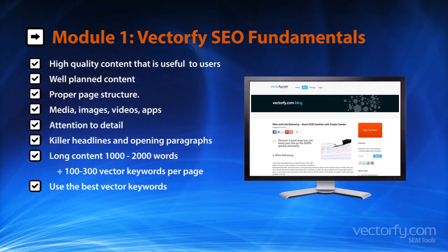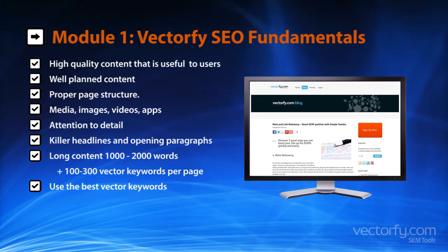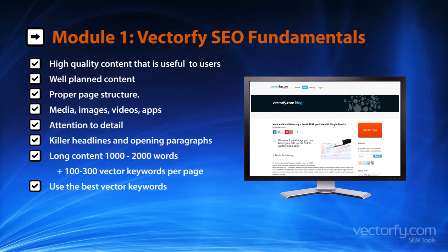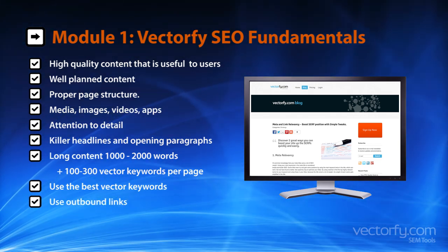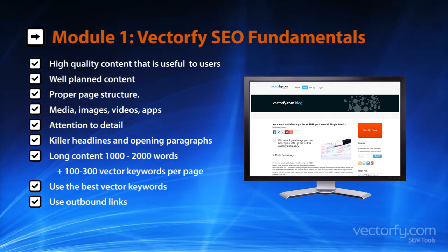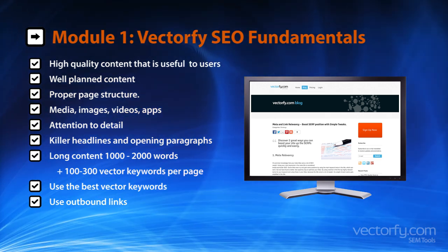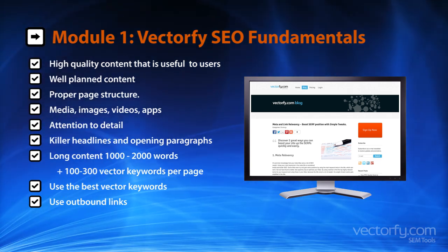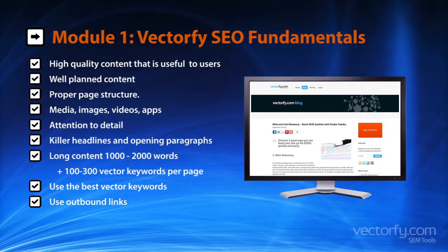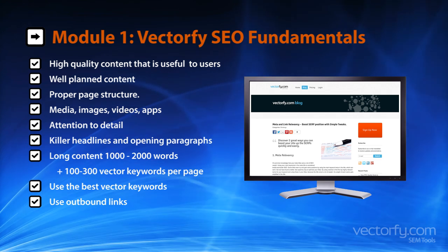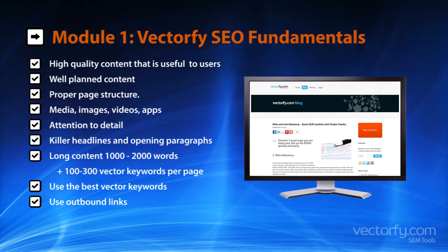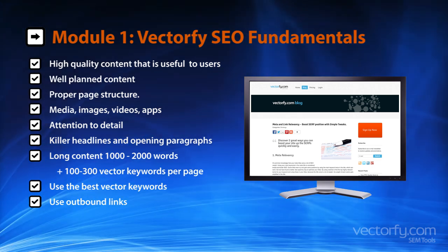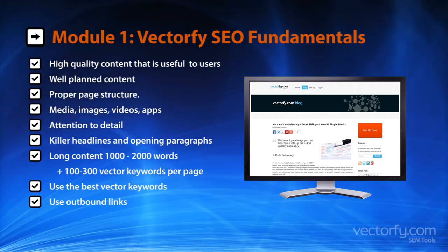8. Use the best vector keywords. This is essential and will be covered in full in a later module. 9. Outbound links. It's important to participate in the web. Linking to relevant sites from your content shows you are contributing to the web. We recommend using at least one or two outbound links on your page to relevant sites — they don't have to be your competition, but other high-quality and relevant articles, blog posts, education pages, wiki pages, etc.